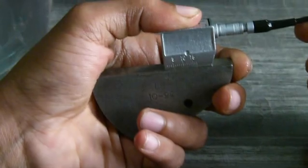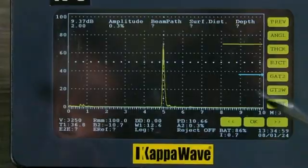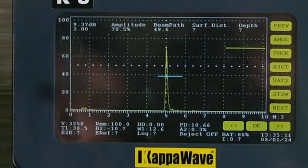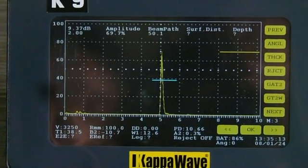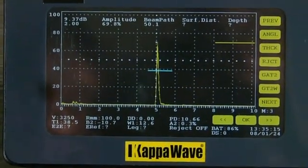If we turn towards the 50mm quadrant, then the signal should also come at 50. So this is one way to cross check the calibration.